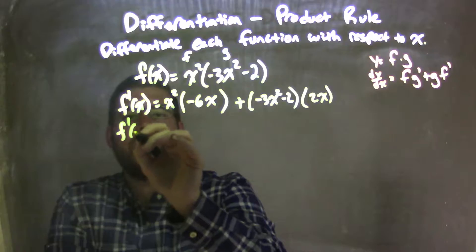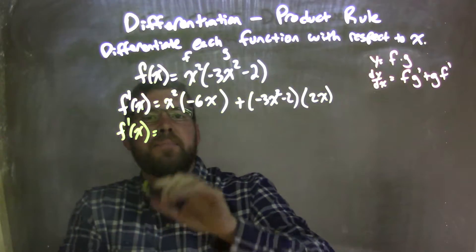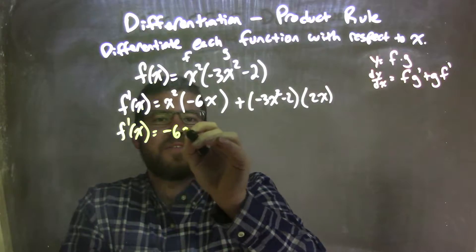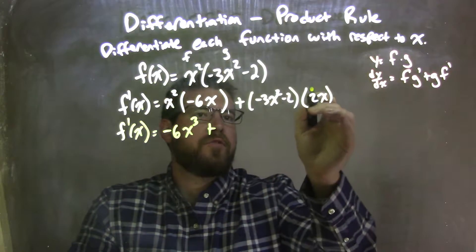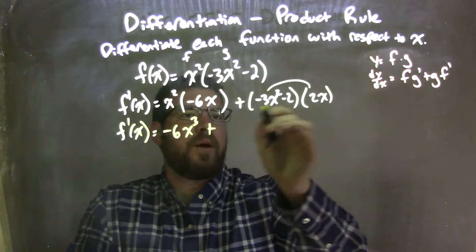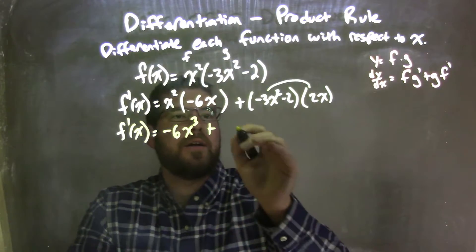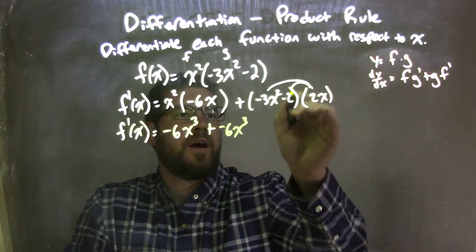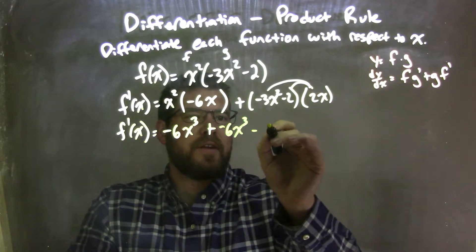so now we need to simplify. So we have f prime of x here, let's simplify that. Well, x squared times negative 6x is negative 6x to the third, plus, distribute this 2x across, 2x times negative 3x squared is negative 6x to the third, 2 times negative 2, so negative 4x.